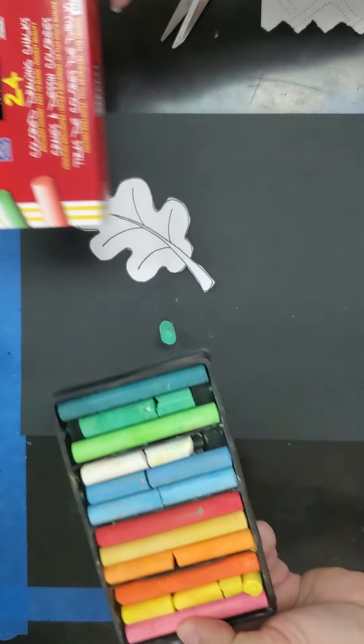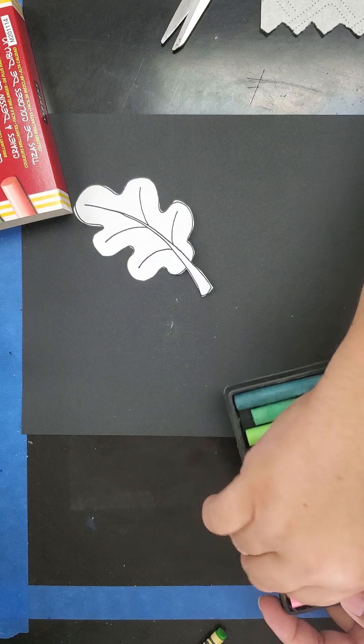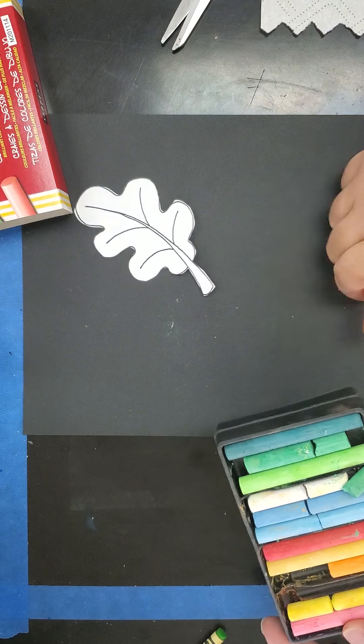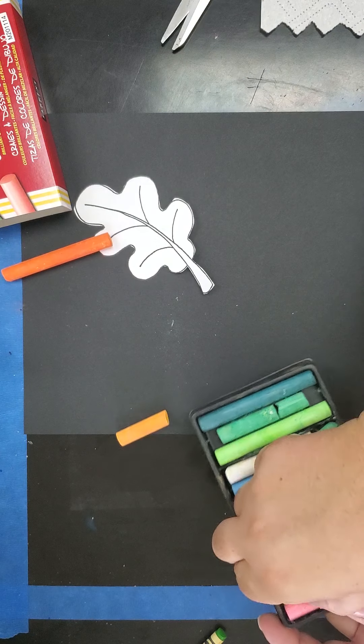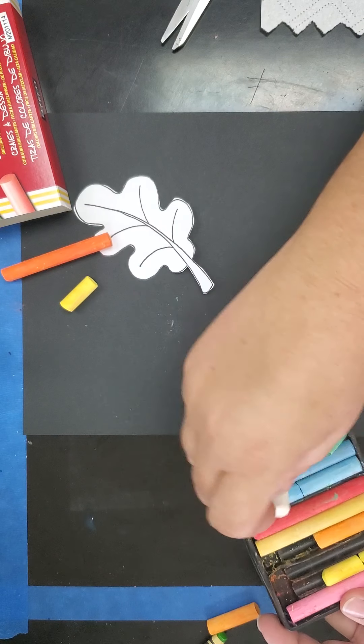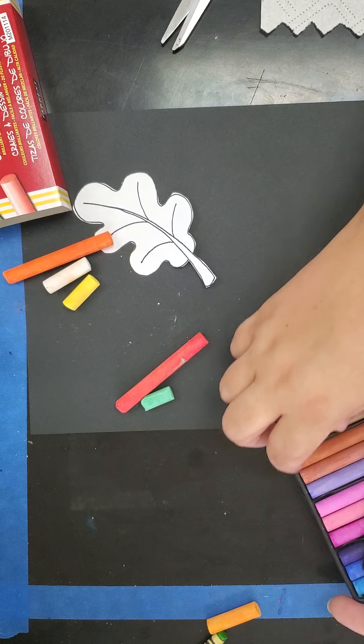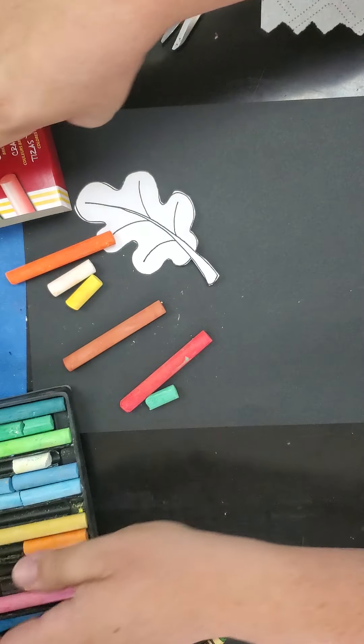All right, so your chalk, you want fall colors. If you don't have fall colors, use whatever colors you have, but I have some fall colors, so I'm going to have some orange. I got different shades of orange, some yellow, maybe a little bit of white because I'm using black paper, maybe a little bit of green and some red. I also have some brown, so I'll take some brown out too.